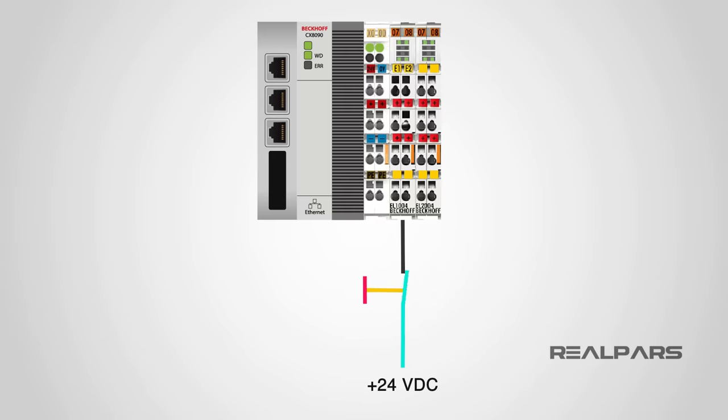Now, imagine the switch is back to the normal mode, but this wire gets disconnected for some reason. What happens now? In this situation, the healthy signal will be lost, and the PLC sees that as someone pressing the switch, right? So it shuts down the whole system.